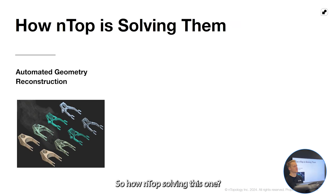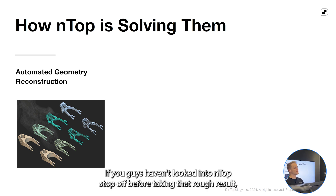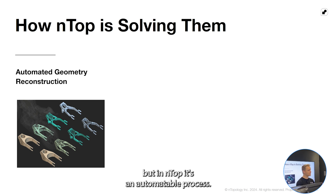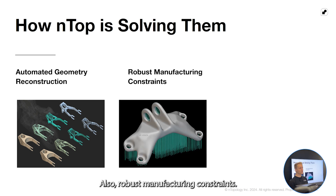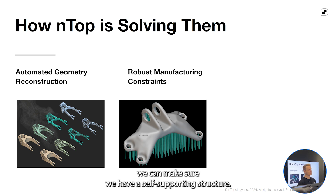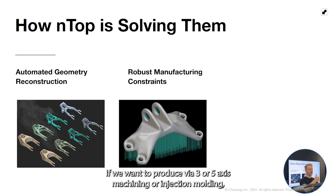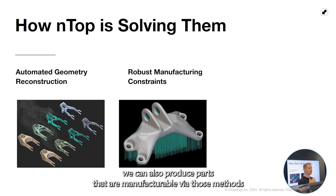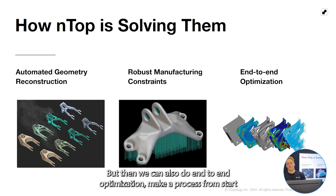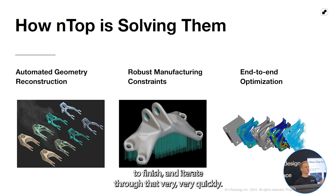How is nTop solving this? First, automated geometry reconstruction. Taking that rough result, smoothing it, and getting it into something you would actually produce can be really difficult in a lot of softwares, but in nTop it's an automatable process — really quite quick. Also robust manufacturing constraints: if we know our printing direction, we can ensure a self-supporting structure. If we want to produce via three or five-axis machining or injection molding, we can produce parts that are manufacturable via those methods right away, with no secondary work needed. And we can do end-to-end optimization — make a process from start to finish and iterate through it very quickly.